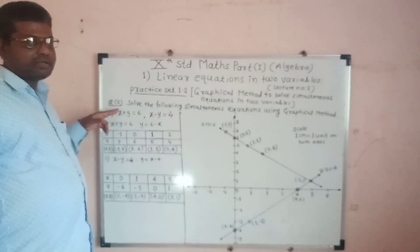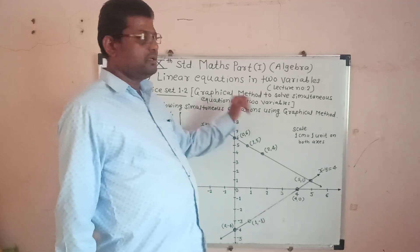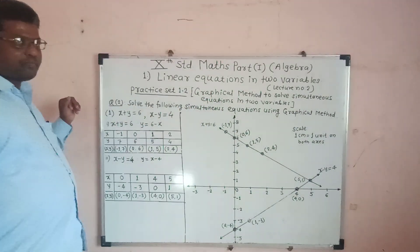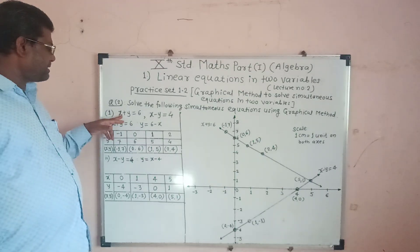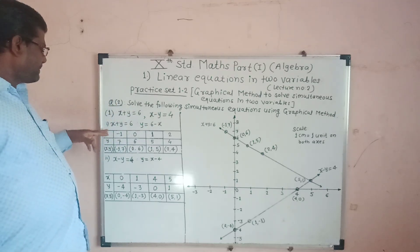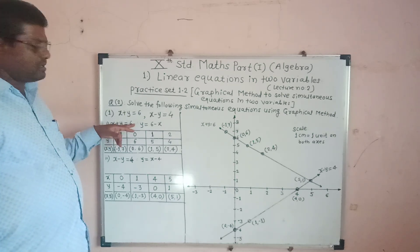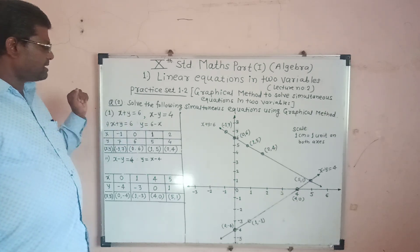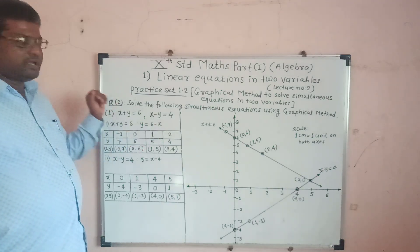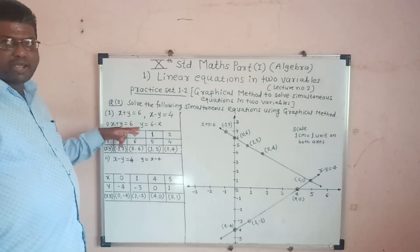Let us solve question number 2. Question number 2: solve the following simultaneous equations using the graphical method. Example number 1: we have given 2 equations — x plus y is equal to 6, and x minus y is equal to 4. From the first equation, y is equal to 6 minus x.